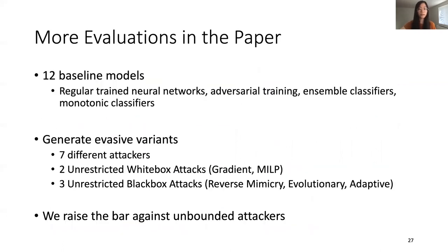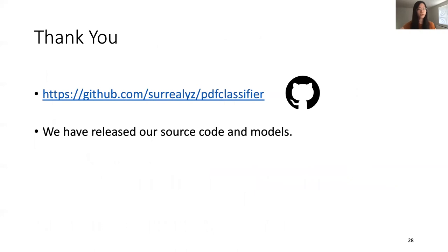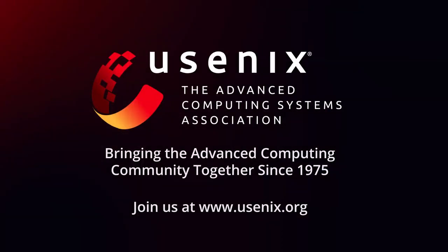We conducted extensive evaluations for multiple verifiably robust models against 12 baseline models using seven different attackers. By training verifiable robustness properties, we can raise the bar against unbounded attackers. The details are in our paper. We have released our source code and models on GitHub. Thank you for watching, and I'll be happy to answer questions during the Q&A session.